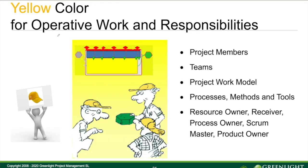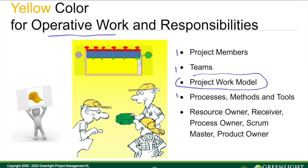Then we have the yellow color. The yellow color represents the operative work or the actual things going on in a project, executed by the project members and the teams that work in the project. We also call it the project work model. Processes, methods, and tools are also yellow. Typical roles that are yellow include the resource owner, the receiver, the process owner, and scrum master or product owner.